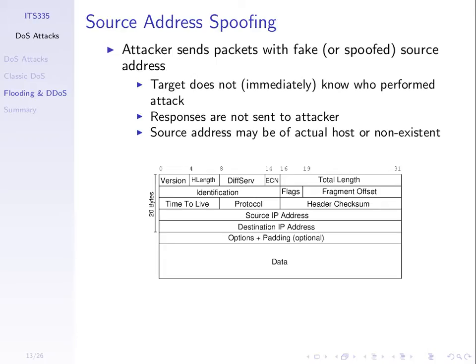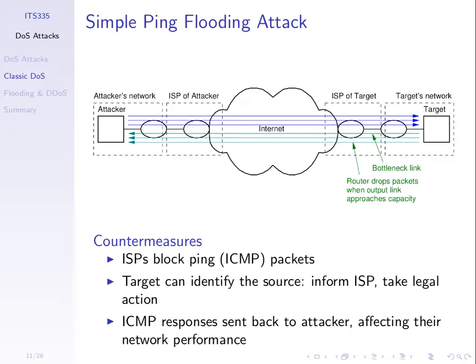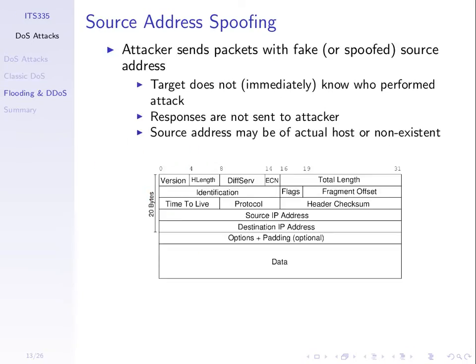Using a fake source address makes tracking much harder. The other result is that the responses don't come back to the attacker, avoiding an overflow of the attacker's own network. This fake source address may be of an actual computer in the internet, or maybe a non-existent one.